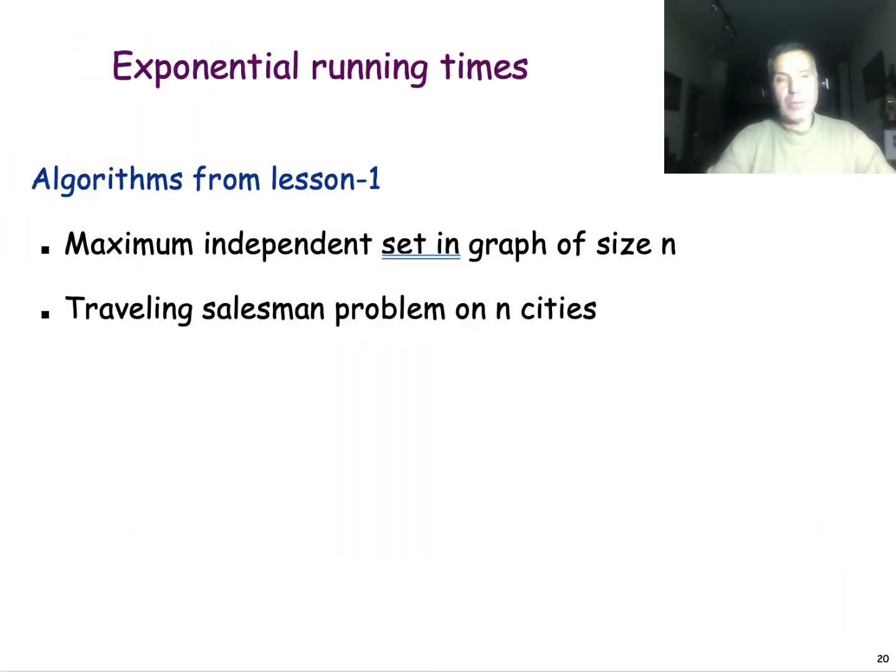Finally, I want to remind you a couple of algorithms from lesson 1. We saw the maximum independent set problem in a graph of size n. The running time for that algorithm was big O 2^n, so this was an exponential time algorithm. And we also looked at the traveling salesman problem, where if we approach it in a brute force way, examining all possible tours, we're getting big O n factorial.